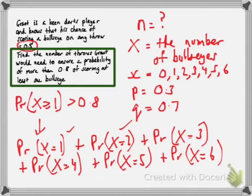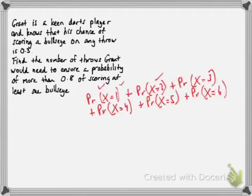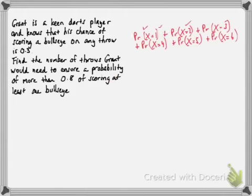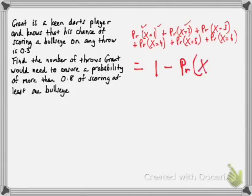All probabilities have to add up to 1. When we look at that, the only one that's missing is the probability of getting no bullseyes. So all of that is 1 minus the probability of there being no bullseyes.